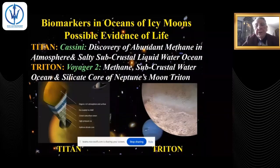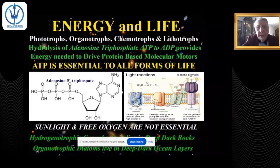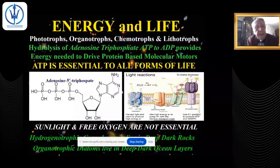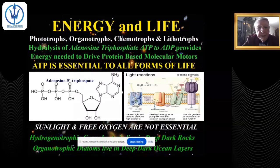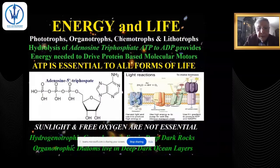It is not essential that energy for life comes from sunlight. Phototrophs use photosynthesis, but there are organisms called chemotrophs that live strictly on chemicals — hydrogen, iron, or sulfur — and lithotrophs that derive material from rocks. The hydrolysis of ATP and ADP provides the energy needed to drive protein-based molecular motors. ATP is essential to all forms of life, but sunlight and free oxygen are not. There are now known hydrotropic microorganisms living in deep crustal rocks.